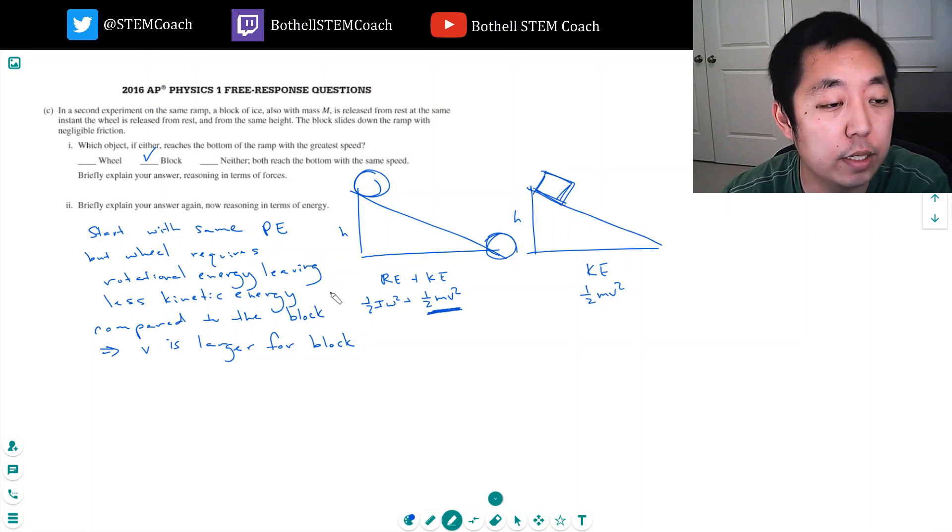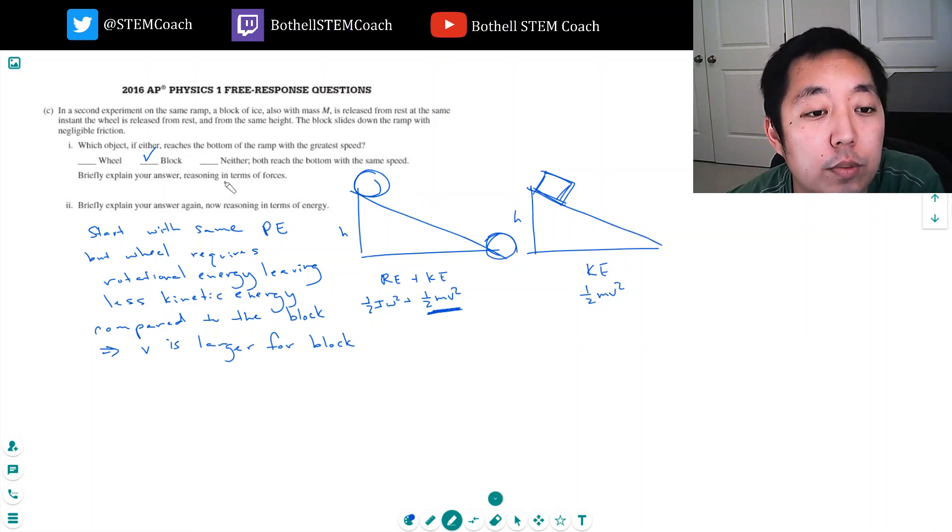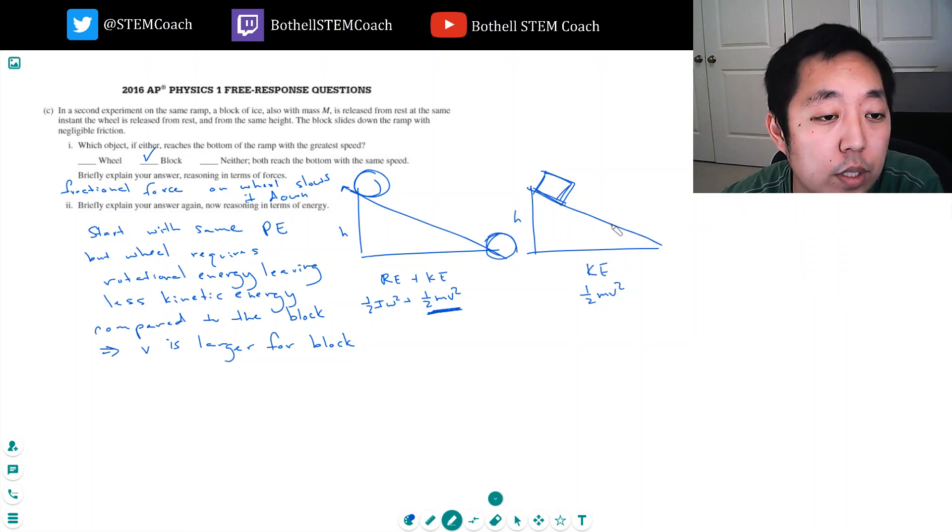oh, and this one, I didn't, I, man, man, I messed up this one pretty bad. I explained the energy. I want to explain this in terms of forces. In terms of forces, what's the reasoning? The frictional force on the wheel slows, slows it down. On forces, the reason this one goes slower is because there's friction fighting it the whole way. And on this one, there's no friction fighting it. So, sorry, I misread it. I didn't, let's see if I got that part right.